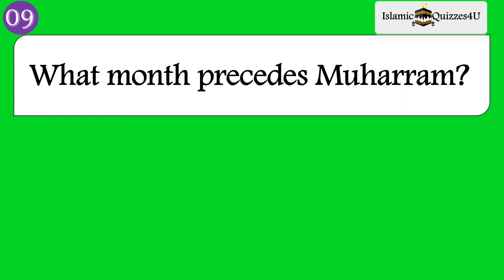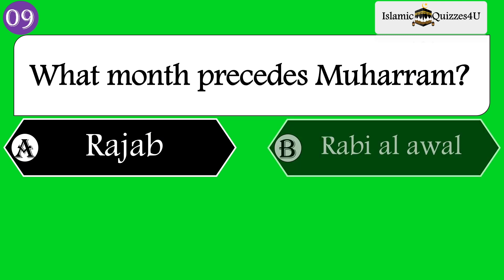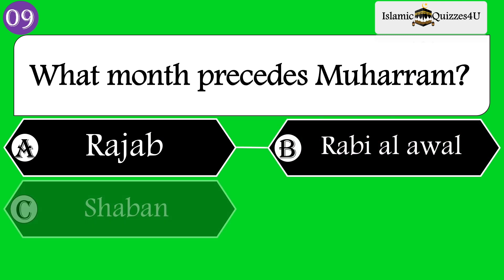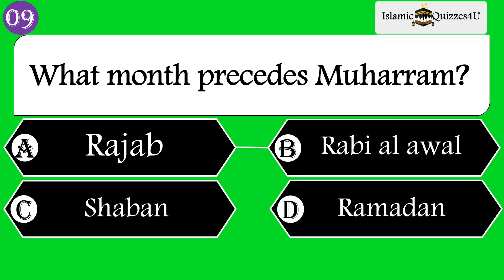Question number 9: What month precedes Muharram? Option A: Rajab. Option B: Rabiul Awal. Option C: Shaban. Option D: Ramadan.